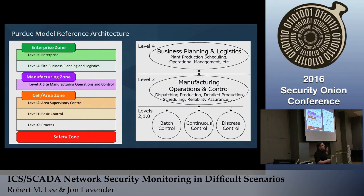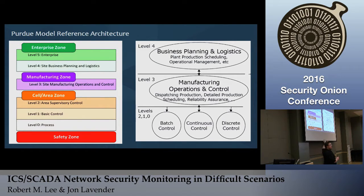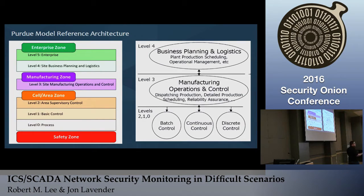The Purdue model is something you'll come to recognize in ICS. Since most of us don't have common environments in an ICS, this is one thing a lot of folks try to standardize on. The Purdue reference model says you have IT systems at the higher levels — the internet, business networks — and as you move down, level three is where you'd have supervisory systems or your SCADA network. Below that you have basic control and process. This model changes depending on the industry; the Purdue model for electric looks a little bit different.